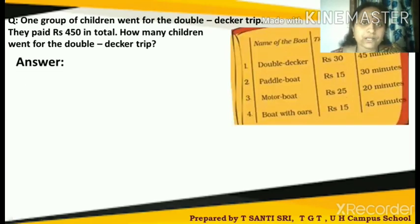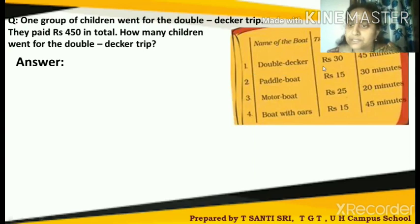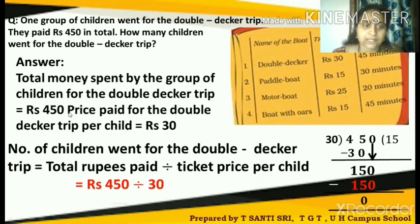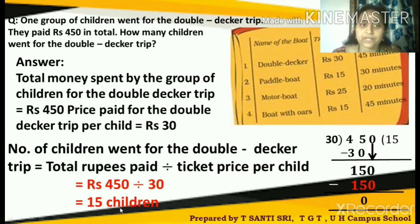One group of children went for the double decker trip and paid rupees 450 in total. How many children went for the double decker trip? Total money paid is 450 rupees. From the table, the double decker ticket is rupees 30 per child. So the number of children is total money divided by ticket price: 450 divided by 30, which is nothing but 15 children went for the double decker trip.